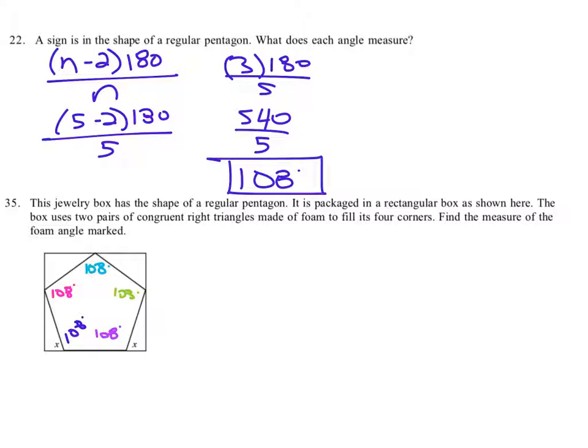Well, that angle measure is the linear pair with 108. If it's a linear pair with 108, they have to sum to 180. So we take 180 and subtract the 108, which is the angle at each vertex of a regular pentagon, and we find that the answer is 72 degrees. So x equals 72 degrees.